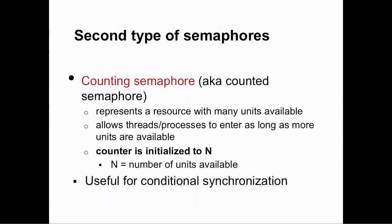The second type of semaphore is the more general kind described in the previous lecture, called a counting semaphore or counted semaphore. This is usually used to represent a resource with many units available, and it allows multiple threads or processes to enter as long as more resource is available — the number of resources is indicated by the counter. In this case you would initialize the counter value to n. This is usually used for conditional synchronization, which means when one thread is waiting for some other thread to finish a piece of work before it continues.